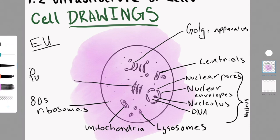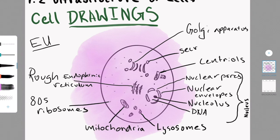On to drawing and labeling a eukaryotic cell. This is specifically a pancreatic cell, so you can find it in your pancreas. The Golgi apparatus receives proteins from the RER, which is the rough endoplasmic reticulum, and modifies and repacks them for secretion.